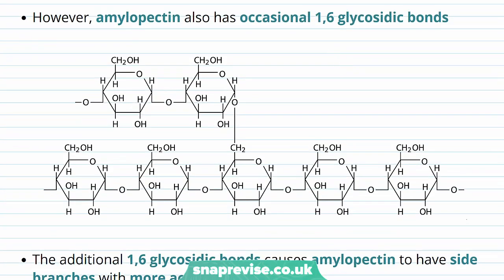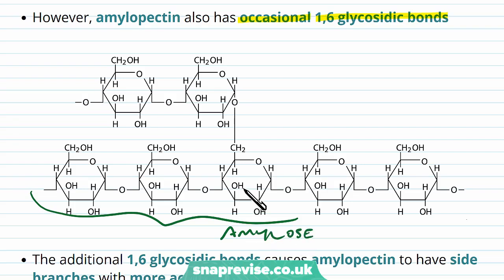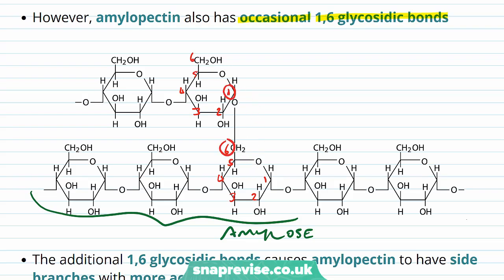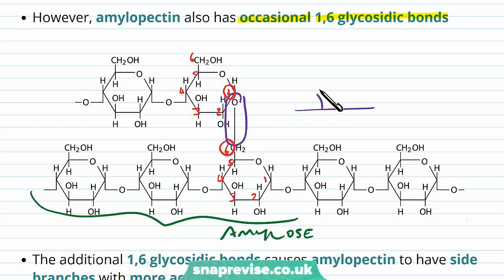But amylopectin has an additional feature: it also has the occasional 1,6 glycosidic bond. Along the main chain, now and then one glucose has a linkage of a different type. Numbering the carbons one through six, we can see a 1,6 glycosidic bond — the same type of bond formed by condensation, but because of its position we now have branching. The chain is joined to another branch.